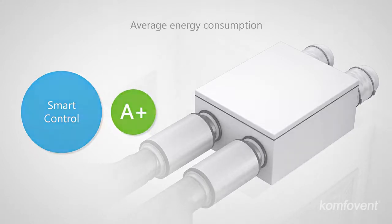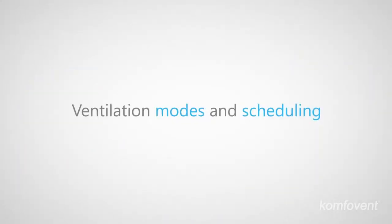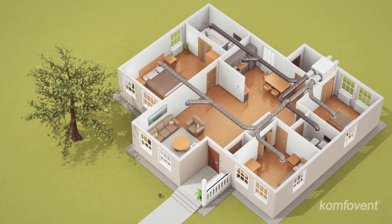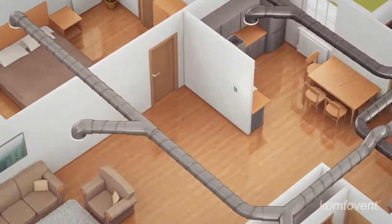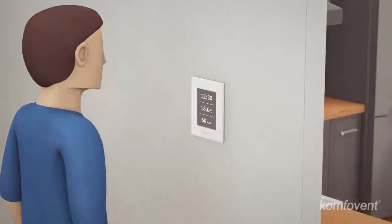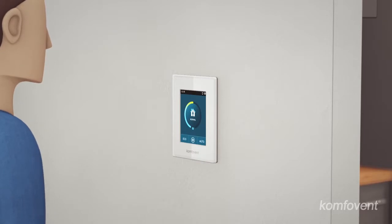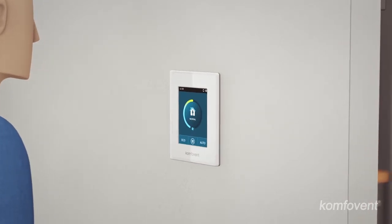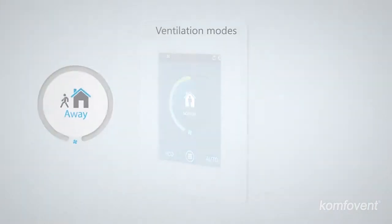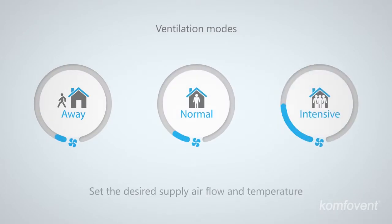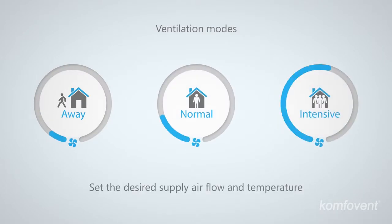It has been estimated that smart control allows reducing the average cost of electricity for ventilation by half. How is this achieved? Excessive ventilation of premises is just a waste of power. You can select different ventilation modes optimized for your daily needs, and each mode allows you to set the volume and temperature of the air supply.